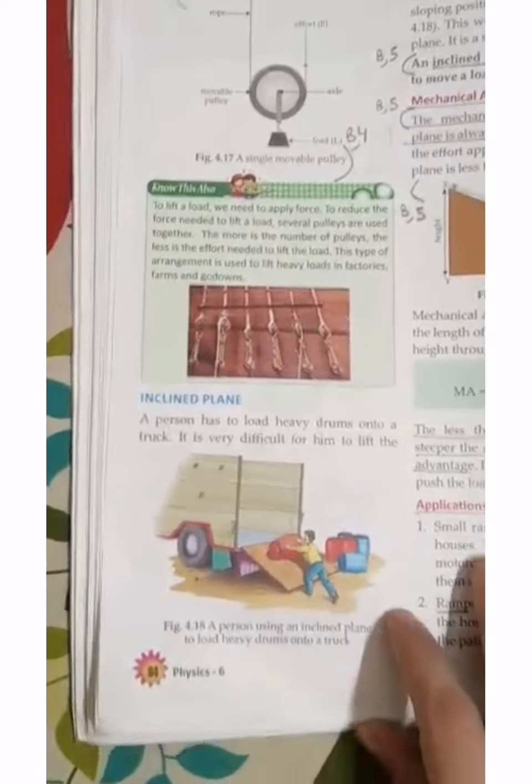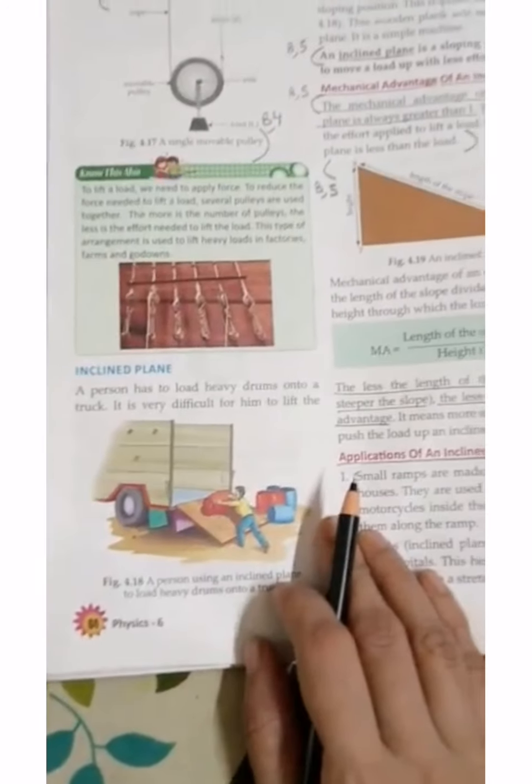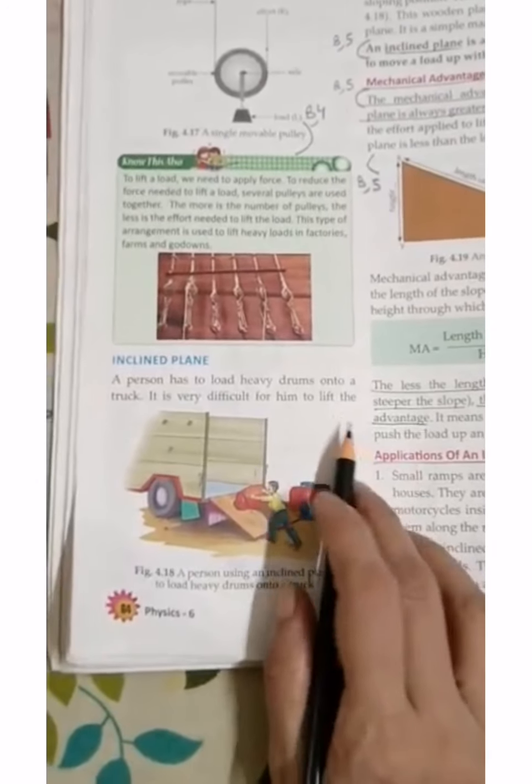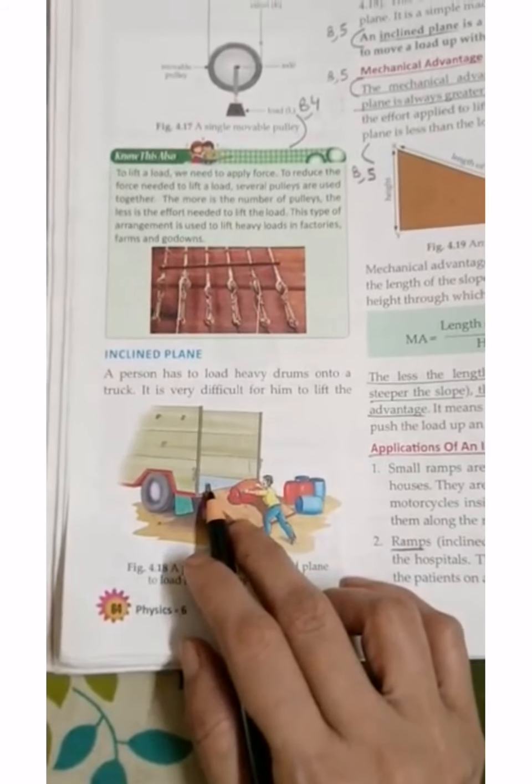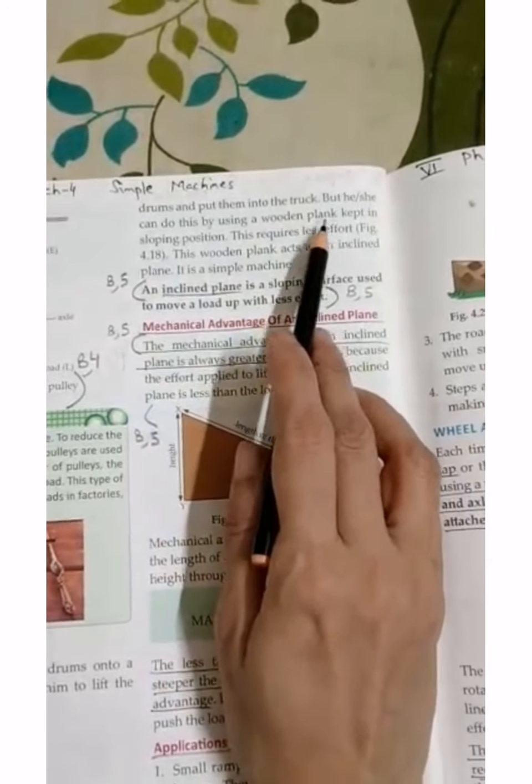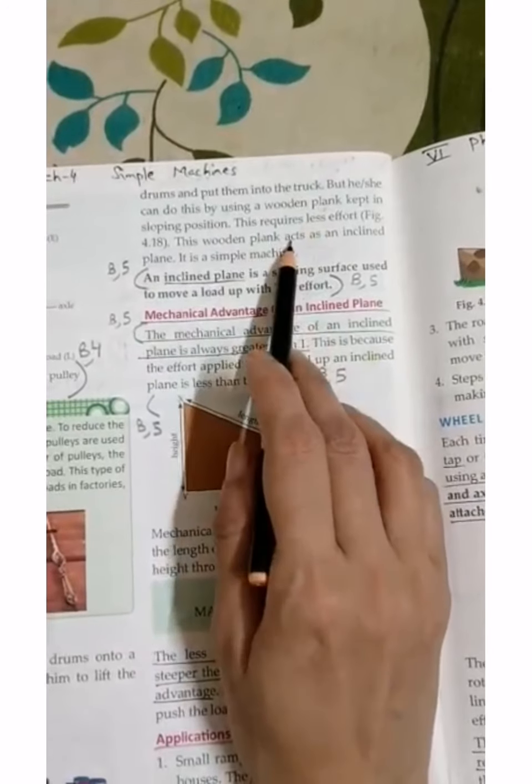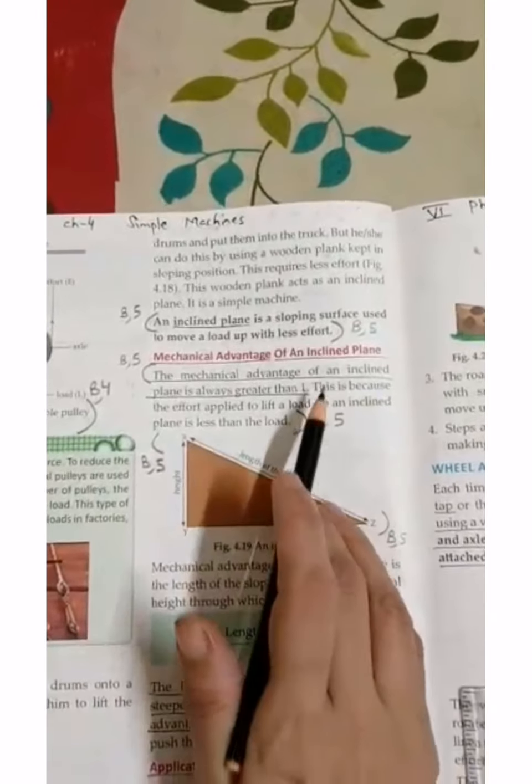Next is inclined plane. What is an inclined plane? You can see Figure 4.18. A person has to load heavy drums onto a truck. The drum is loading in the truck. There are many difficulties in lifting it. So what will he do? He can do this by using a wooden plank. If he can use a wooden plank, then he can lift it easily. So this is an inclined plane.